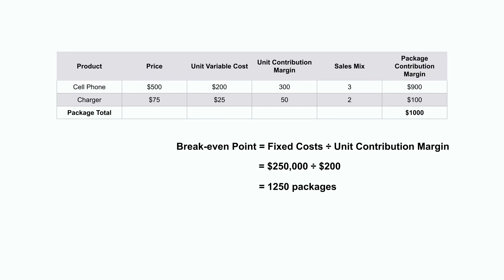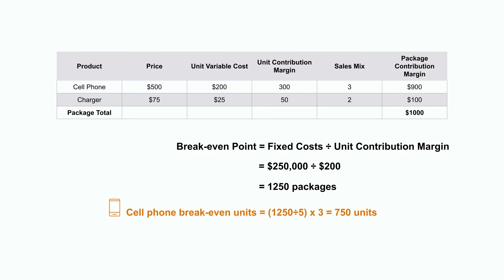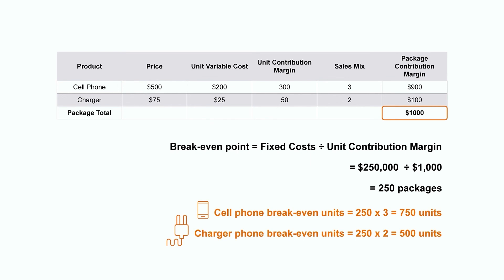We can now calculate the break-even point for this multiple product scenario using the formula: fixed costs divided by unit contribution margin. We take the $250,000 of fixed costs and divide by the weighted average contribution margin of $200, giving us a total of 1,250 packages. We can break this down further between cell phones and chargers. For cell phone break-even units: 1,250 packages divided by 5, multiplied by 3, equals 750 units. For charger break-even units: 1,250 packages divided by 5, multiplied by 2, equals 500 units. Based on this expected sales mix, the company would need to sell 750 cell phones and 500 chargers each period in order to break even.